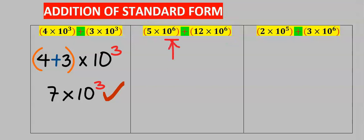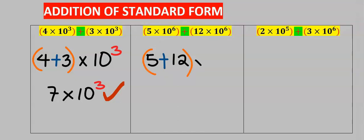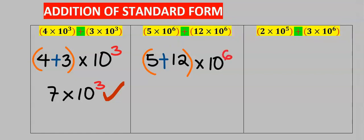Let's consider this question. The first step is to check if the 10s are the same. Since they are the same, I will go ahead with the addition. Step one: I'm going to add the numbers. Step two: I will multiply this with 10 to the power of 6, since both are the same. Next, I will add 5 and 12.